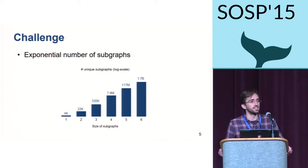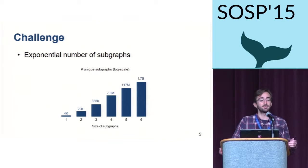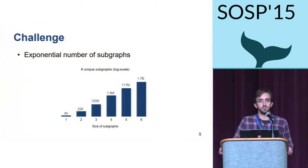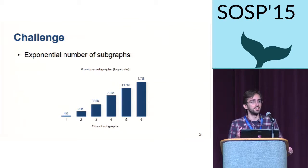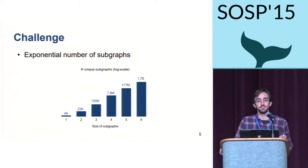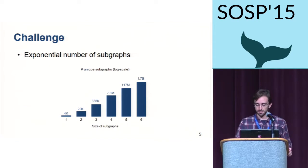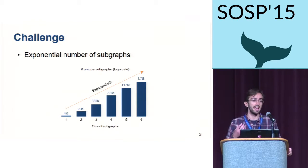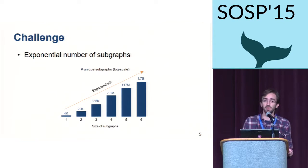The real challenge with graph mining has to do with the fact that there is an exponential number of subgraphs. Even with a graph with just 4,000 vertices — 4,000 subgraphs of size one — by the time we are looking at subgraphs of size 6, we are already talking about 1.7 billion of these subgraphs. This growth is exponential, so handling this is complex and expensive.